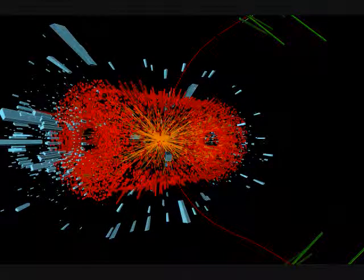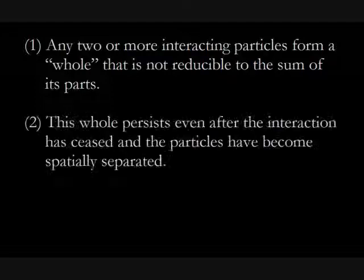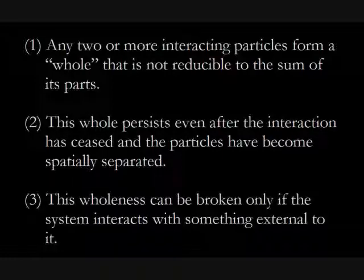These holistic features will continue indefinitely until, or unless, something external to the two-particle system interferes with it, destroying the unity. Summarizingly, quantum theory shows that one, any two or more interacting particles form a whole that is not reducible to the sum of its parts. Two, this whole persists even after the interaction has ceased and the particles have become spatially separated. And three, this wholeness can be broken only if the system interacts with something external to it.